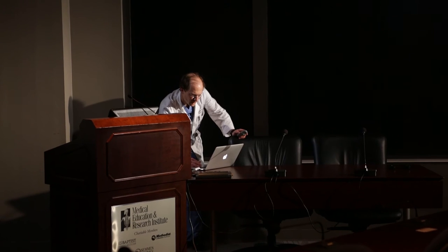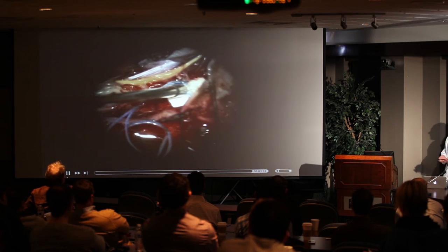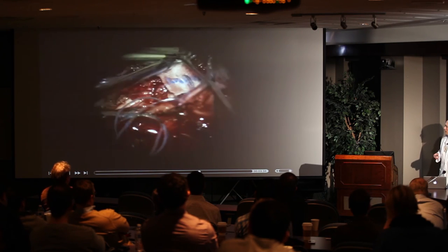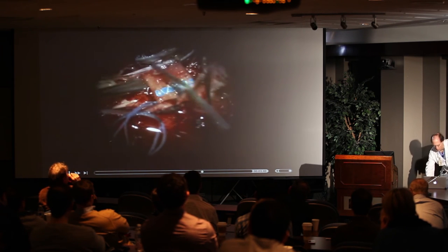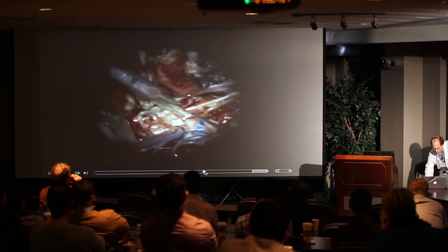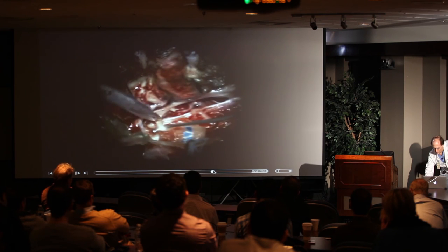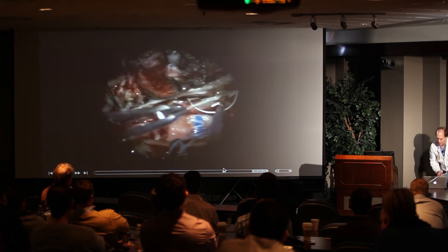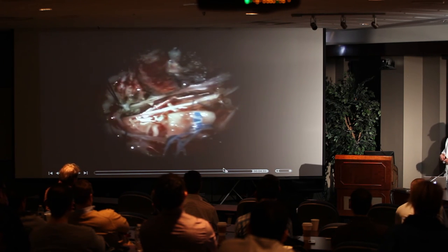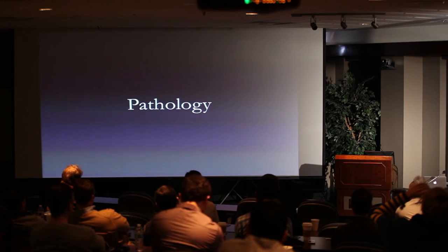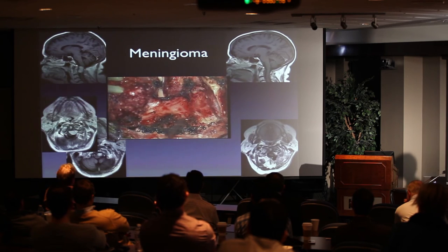A little variation worth mentioning: the dentate ligament. Occasionally, in situations where the pathology has not displaced everything, you can take the dentate ligament and roll the cervical cord out of the way. Of course, don't place too much traction, but you can take a suture, tie it through the dentate ligament, and roll it back. You can see this is an AVM in that region — it really creates nice exposure. There are lots of little modifications you can do to enhance your exposure with the far lateral approach.